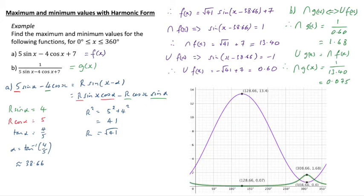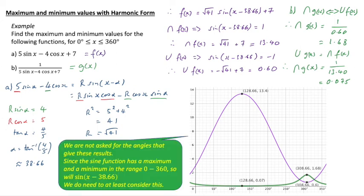And we can see a graph of that here. There is, in purple, that is, oh, I've colour-coded that nicely. I've done the writing in purple and the graph in purple. Well done, me. And we can see the maximum minimum there for each of those graphs. And also the angle involved. Not that we care about the angle involved, because it was only the values that were asked for. Oh, and there it says. We're not asked for the angles to give these results. Since the sine function has a maximum and a minimum in the range of 0 to 360, so will sine of x minus 38.66. And we do need to at least consider this. But they certainly do have those maximums and minimums in the range that we're looking at.